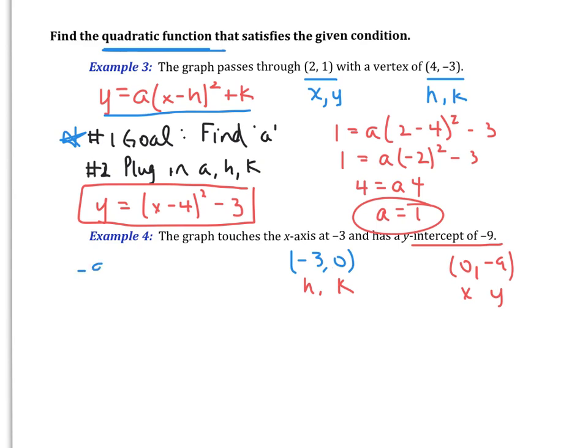So y is equal to negative 9. I don't know what my a value is. My x value is 0, minus my h value of negative 3, which means I'm technically adding 3, squaring that, and then plus k. And you don't have to write the plus 0, I'm just showing it. From here I've got negative 9 is equal to 0 plus 3 is 3, squared is 9, so it tells me a is equal to negative 1.